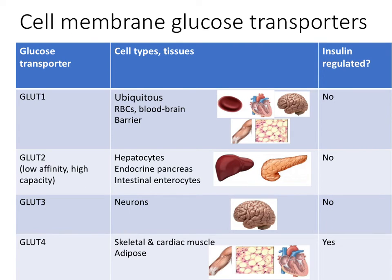Let's start by talking about how glucose exits the blood and enters the cells of our body. This is through specific glucose transporters, or GLUTs, four of which are described on this table. GLUT1 is expressed ubiquitously, meaning that essentially every cell type in our body has this glucose transporter. It is not regulated by insulin — it's called constitutive, meaning it is always present. Red blood cells and the blood-brain barrier only have GLUT1, and so they are very dependent on this glucose transporter.